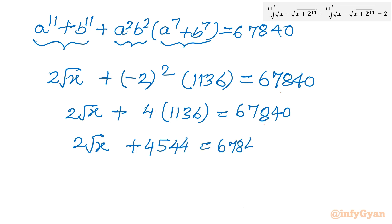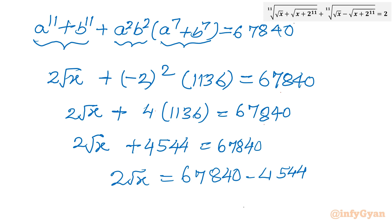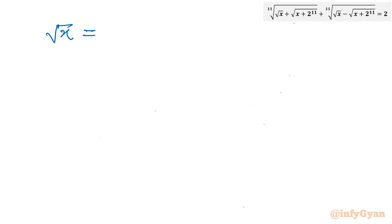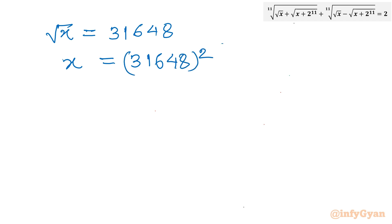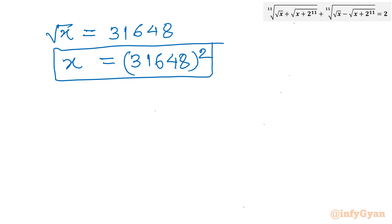So 2√x = 67840 − 4544 = 63296. Dividing both sides by 2: √x = 31648. Squaring both sides: x = 31648² = 1,001,594,904... approximately 1001595904. The expanded value is about 1,001,595,904 or 10,015,959.04 — cross-examining by substituting back confirms the sum equals 2.